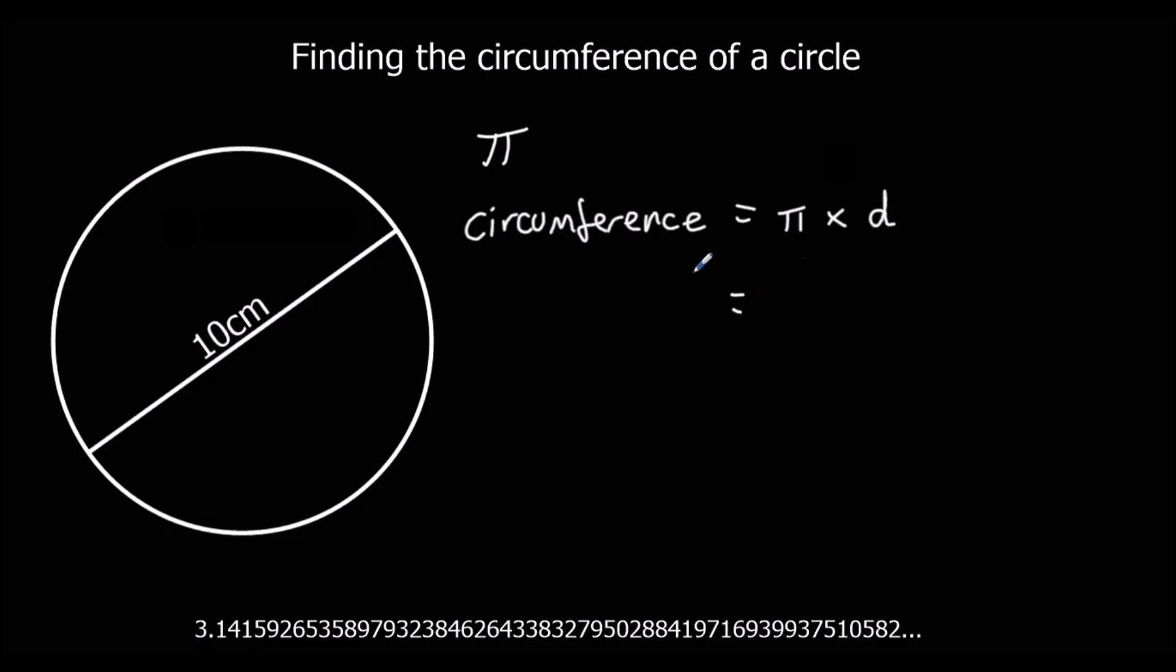This is also the same formula sometimes written as 2 times pi times the radius. So remember, two radiuses make a diameter. So it's the same formula, but instead of a diameter, you've got 2 times pi times the radius, which is the same thing. So we can use either of these formulas to find the circumference of a circle.